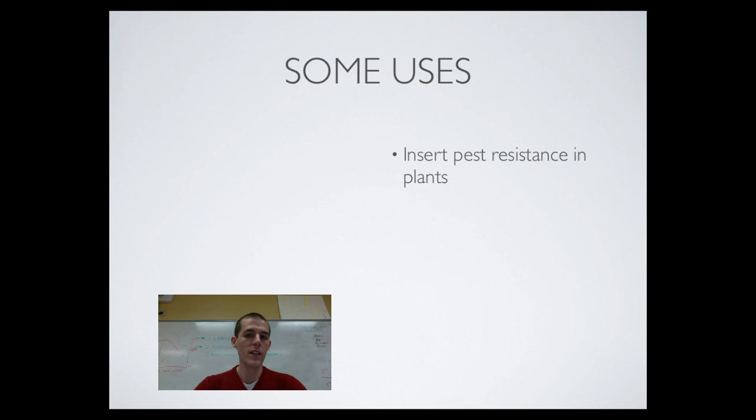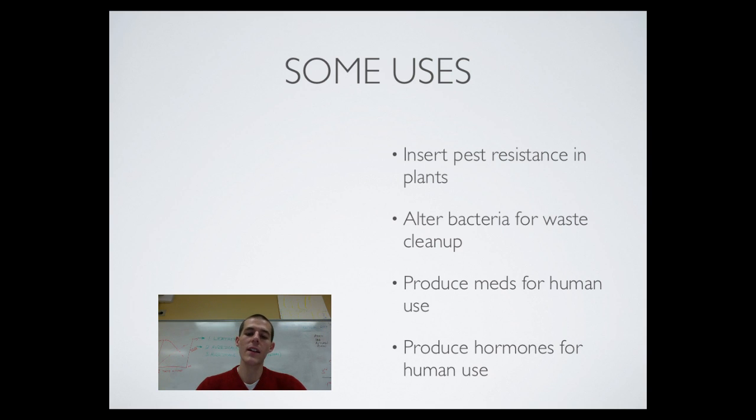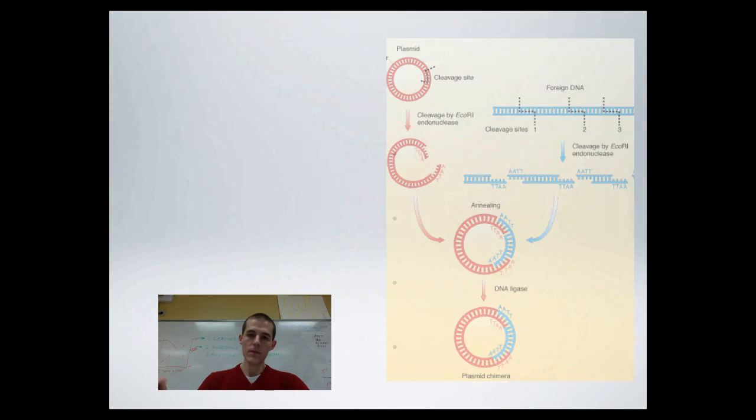First of all, you got insert pesticide resistance in plants. Alter bacteria for waste cleanup. So a couple of years ago, we had the BP oil spill in the Gulf. One of the things that they tried to do to clean up that mess was to use bacteria that had been genetically altered to eat oil. So if you can find a gene in one organism that helps it to process oil and then put that into bacteria, you now have bacteria that can go out and clean up an oil spill. In some cases, animals have been genetically engineered to produce meds for human use, and the research would have been done using gene cloning. And same thing with hormones also.